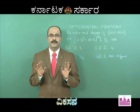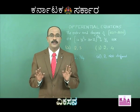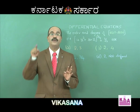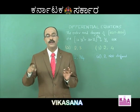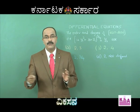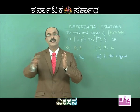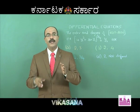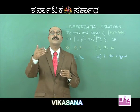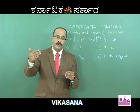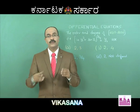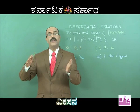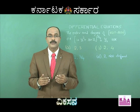Let us say, what is sin x? Using Maclaurin's expansion: x minus x cubed by 3 factorial plus x power 5 by 5 factorial minus x power 7 by 7 factorial. It will continue, keep on going. You can have powers up to infinity also.